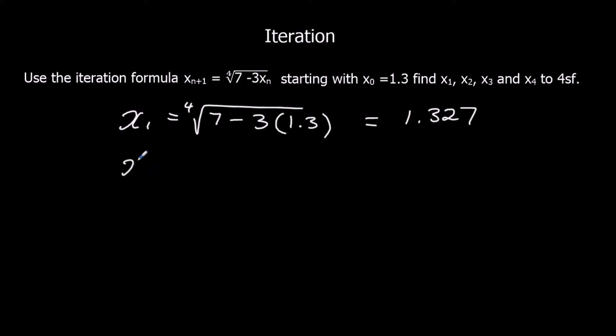Then to find x2, we're going to do the fourth root of 7 minus 3 lots of the answer. So we're going to use the answer button again to make it easier for ourselves. And to 4 significant figures, 1.318.